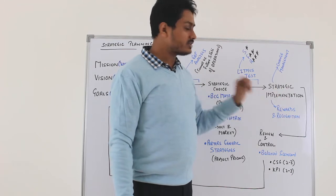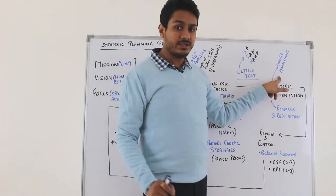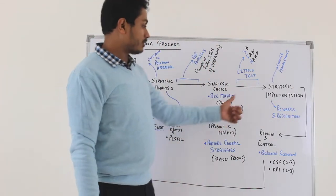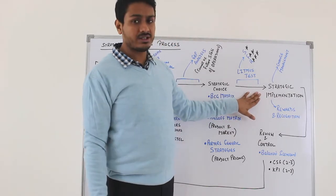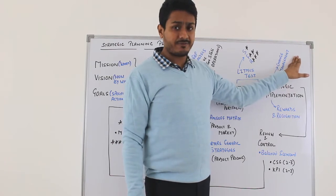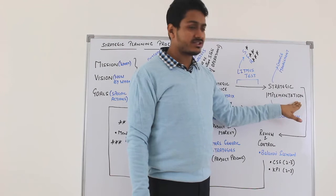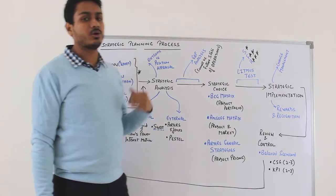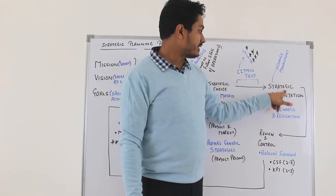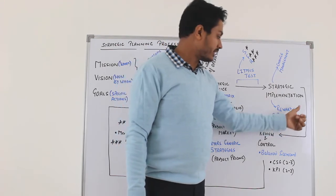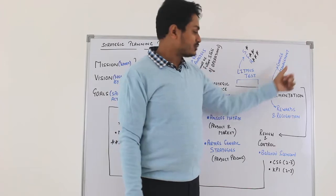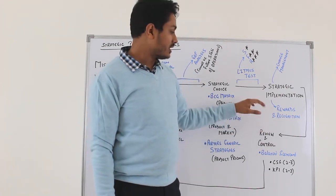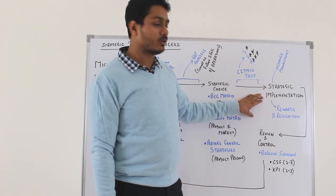Strategic implementation requires two elements. One of the critical elements of the E2 syllabus is change management. When we do a strategic planning process, we are not talking about small changes — we're talking about major and material changes, which will invoke change management. If change management is effective, that leads to effective strategic implementation, helping achieve goals in the short, medium, and long term. The other element is reward and recognition: people who support strategic implementation need to be rewarded, so the company must put in place a reward and recognition structure to motivate employees and stakeholders to accept change.